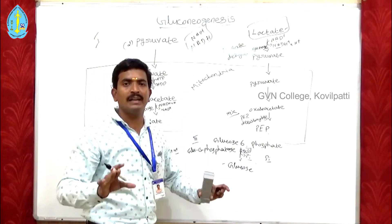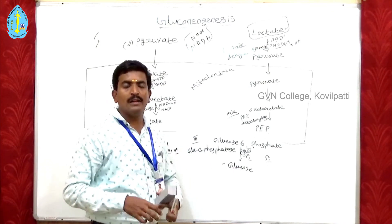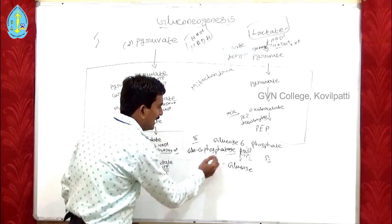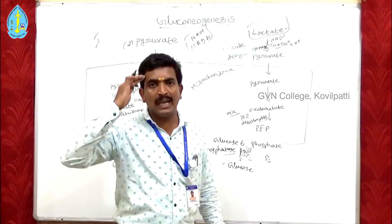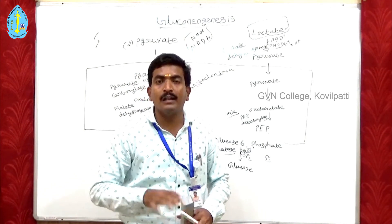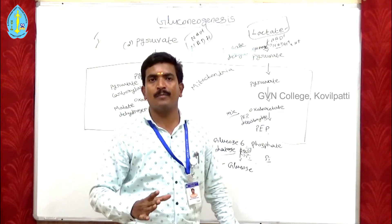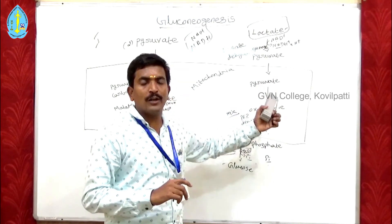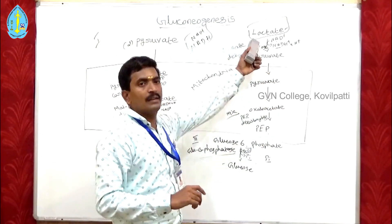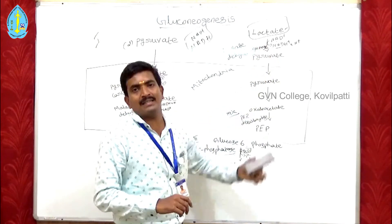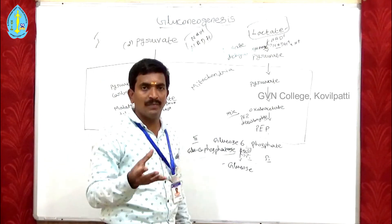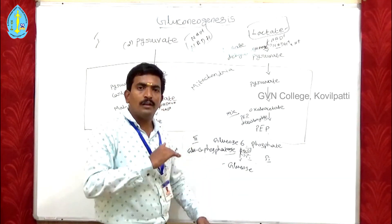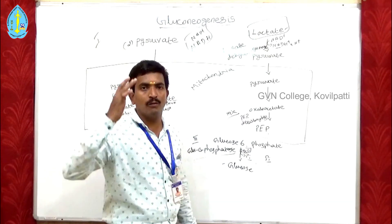So gluconeogenesis means the conversion of new sugar from non-carbohydrate precursors. Importantly, glucose 6-phosphatase is not present in our brain or muscle cells, so gluconeogenesis does not occur in brain and muscle cells. Those cells need glucose during non-meal times or during fasting. The glucose conversion occurs in the liver. Lactate formed during anaerobic fermentation, or pyruvate synthesized in glycolysis, is transported to the liver, where it is converted into glucose. That glucose enters the blood as blood glucose and finally reaches our brain and muscle cells.